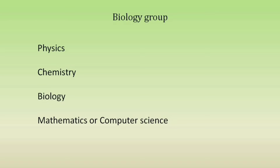The first group is the Biology group - Biology with Mathematics. If you are doing biology and mathematics, this is a very versatile group. You can learn anything about this group. In college, you can learn medicine or engineering. You can learn B.Sc. Zoology, Botany, Physics, Chemistry. You can learn anything about this group.